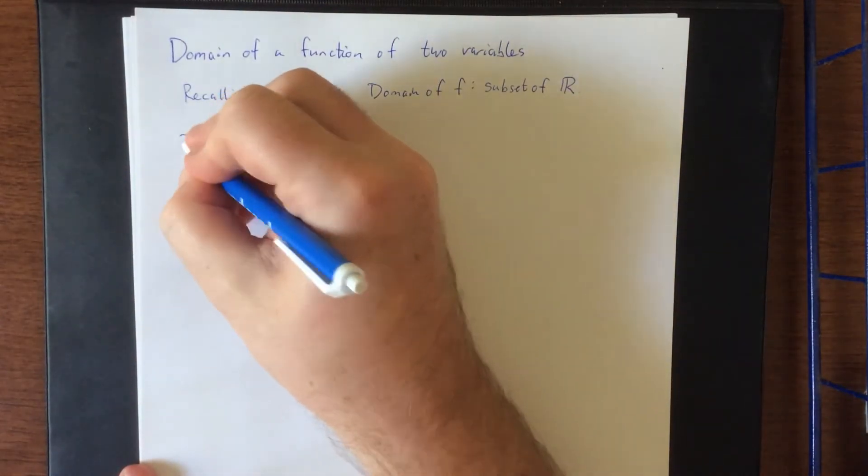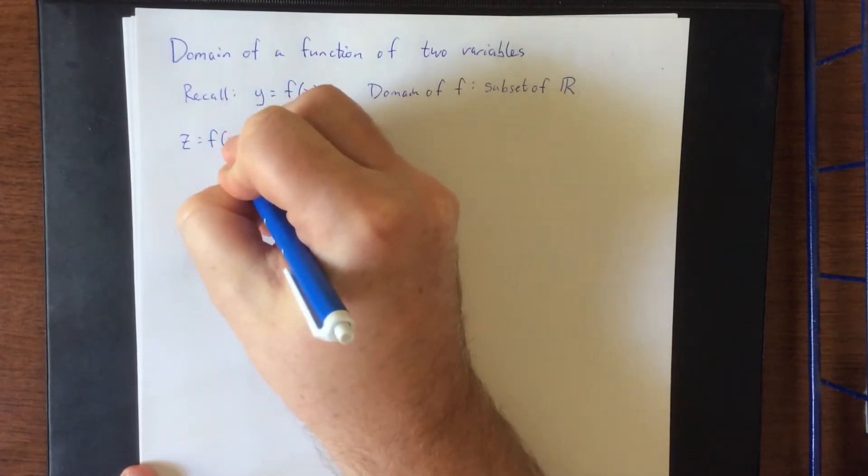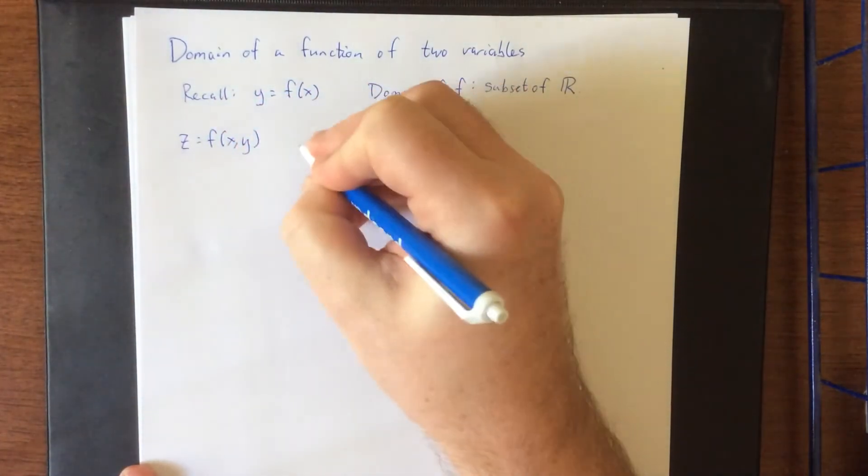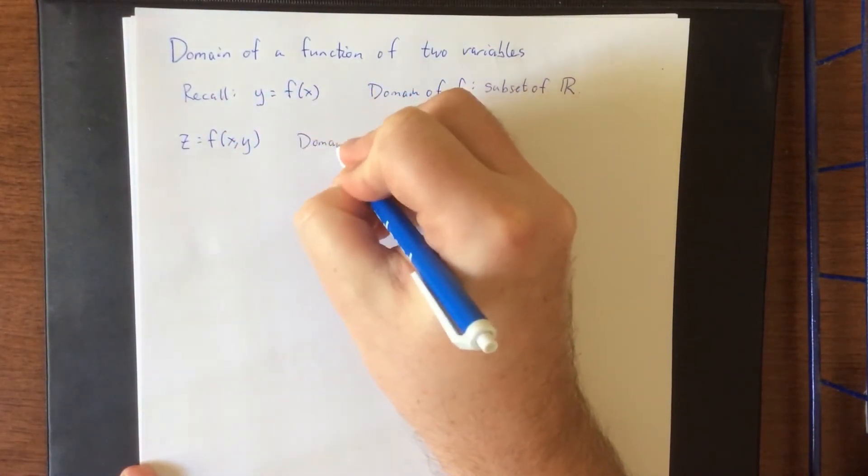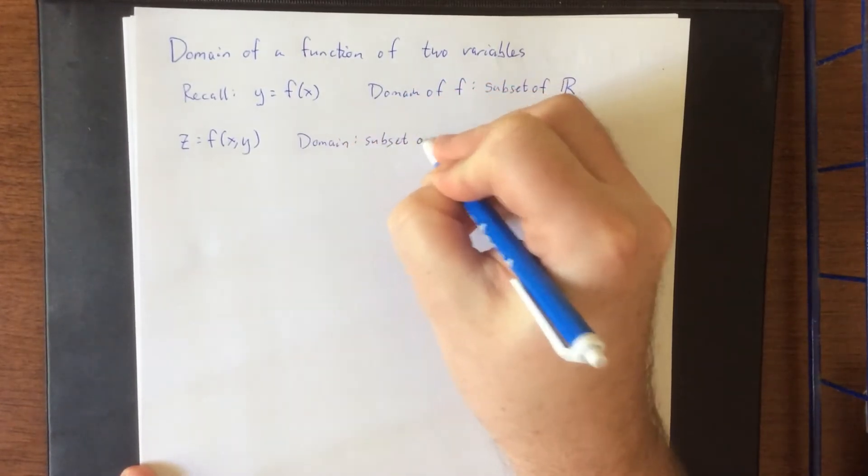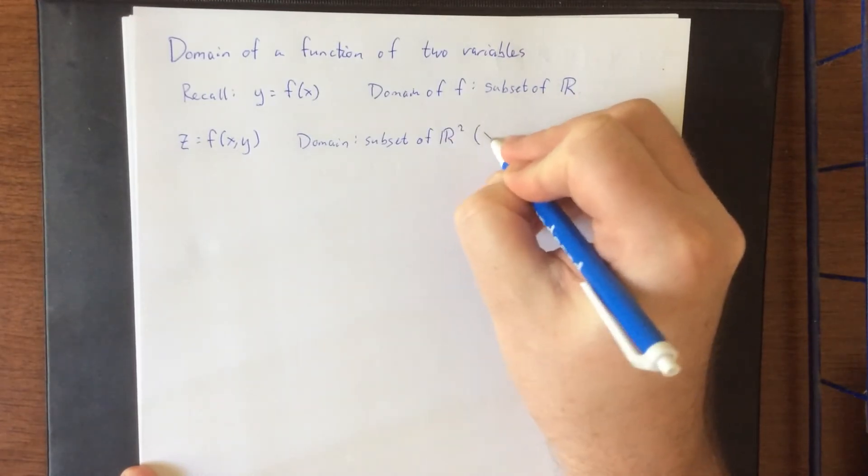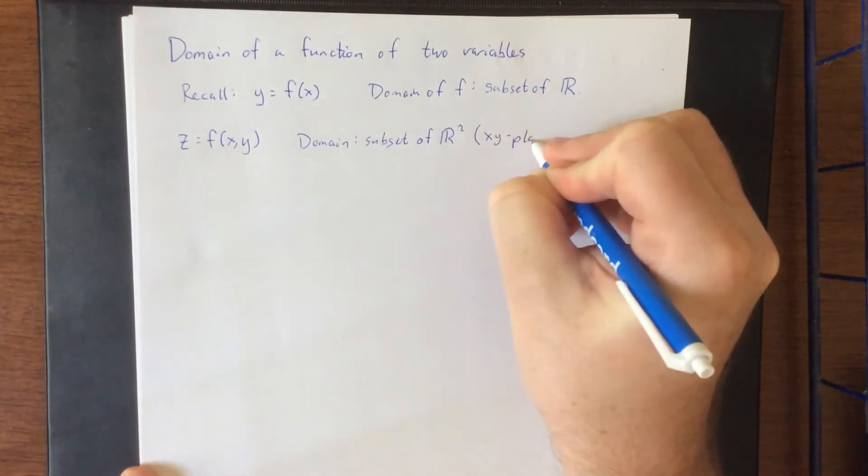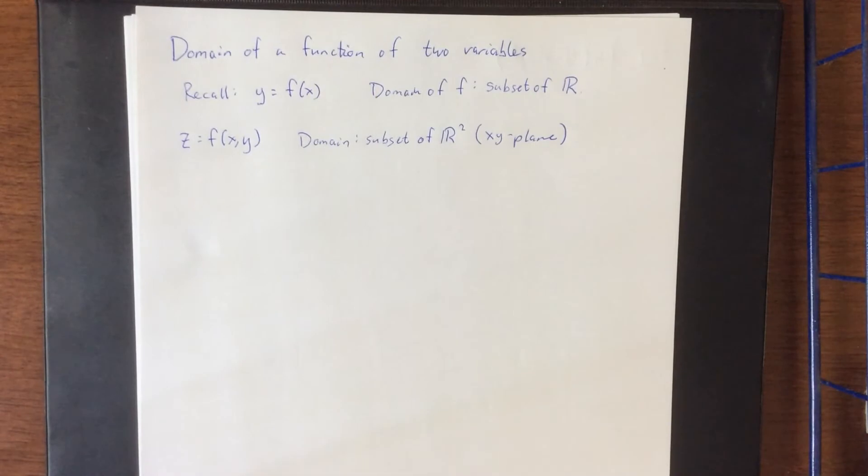So when it comes to a function of two variables, z equals f(x,y), the domain is going to be a subset of R², which would be the xy-plane. Now typically when we are representing this domain there are going to be two different ways to do it. One would be using set notation and one would be to actually sketch the region within the xy-plane. We're going to do both in these examples.